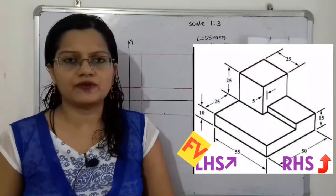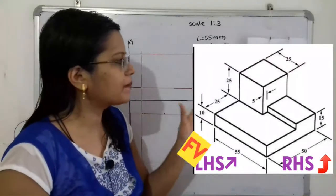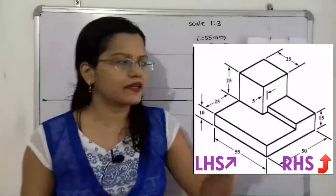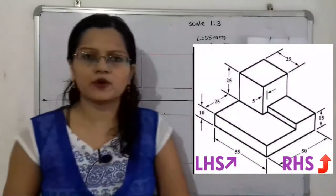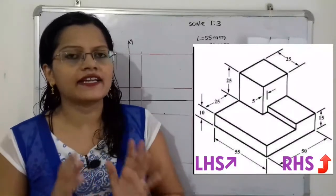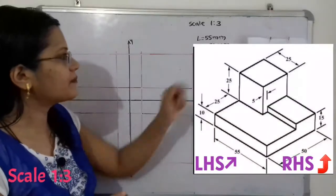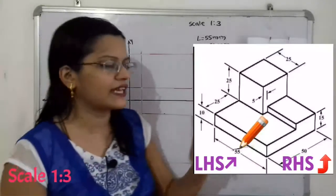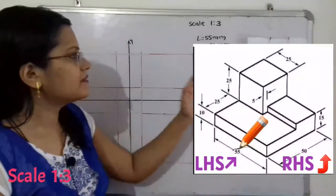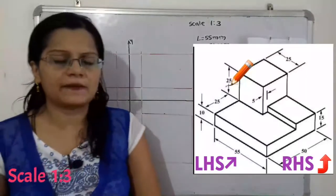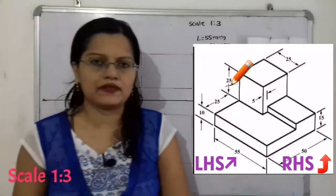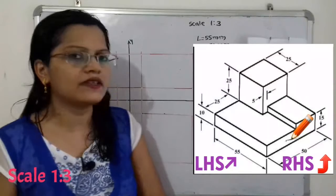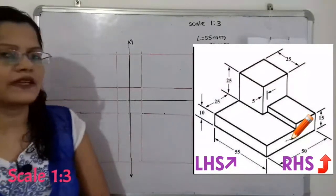We will take the left hand side as the front view. Since the dimensions — 50mm, 55mm, and height 35mm — are very small, we will use the scale 1:3, meaning 1 millimeter in the given object equals 3 millimeters in the orthographic projection. So length becomes 55×3 = 165mm, height is 35mm (25+10), giving 35×3 = 105mm, and width is 50×3 = 150mm.